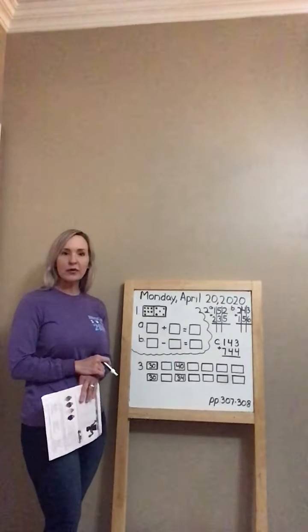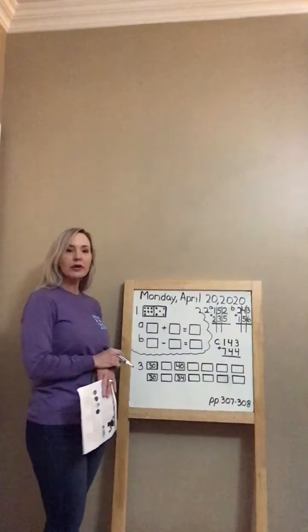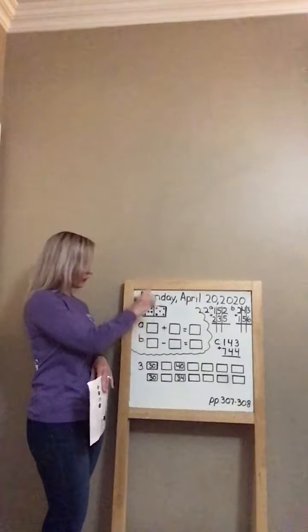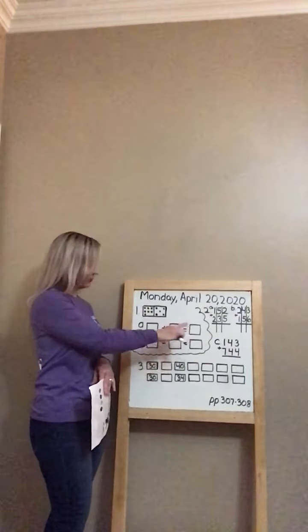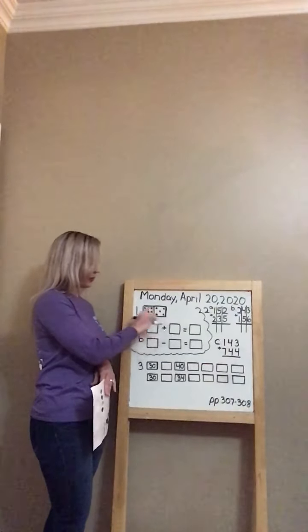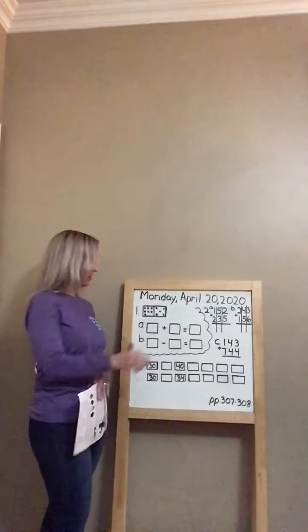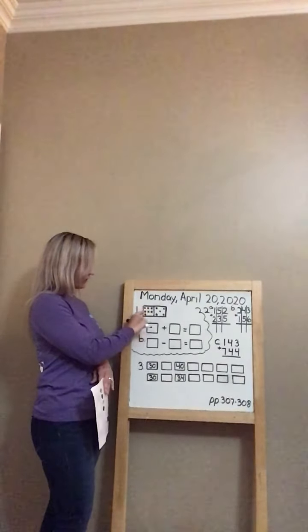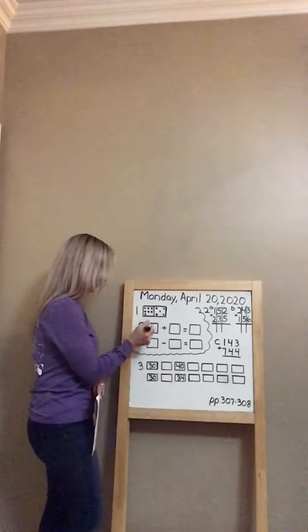When you do an addition problem for the dot card, you're going to count one side of the dot card and record that number. You're going to count the other side of the dot card, record that number, and then you'll add both of those sides together to get your sum. Let's look at our dot card. Our first side has three, six, seven dots.